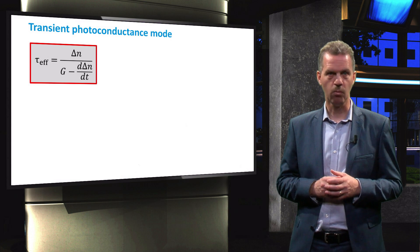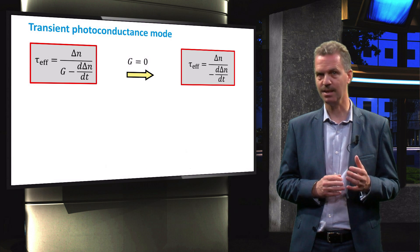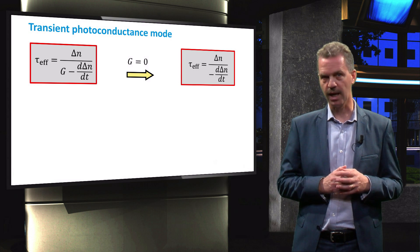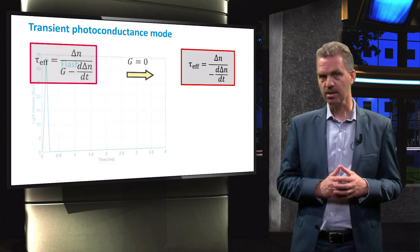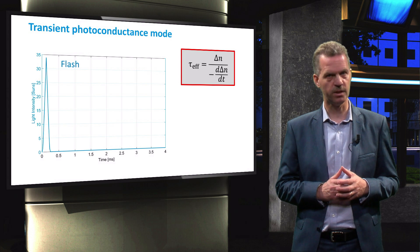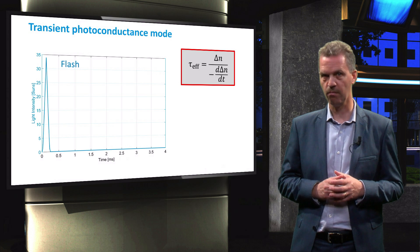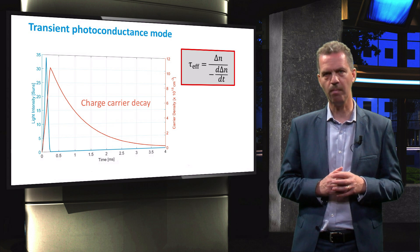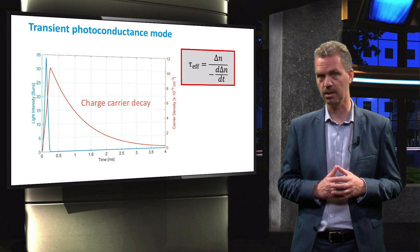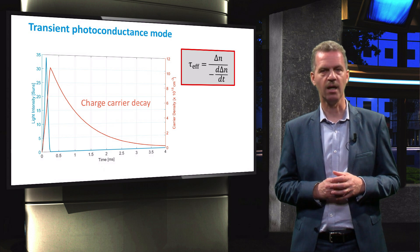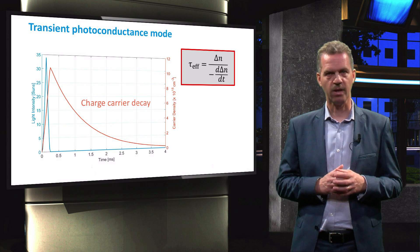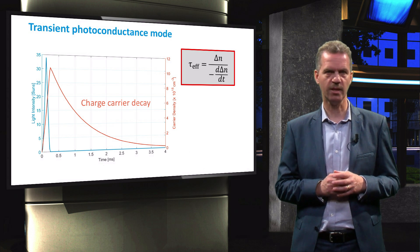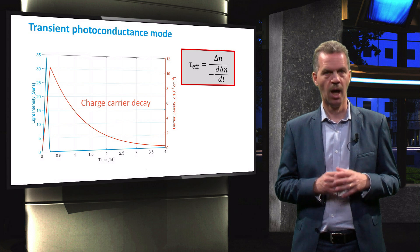In the transient mode, the equation for the effective carrier lifetime is simplified by setting the generation rate to zero, which is achieved by using a very short flash. This reduces the expression to the following form. The intensity of the flash is in the order of 30 to 35 suns and has a duration shorter than 0.5 milliseconds. A typical flash will generate a charge carrier density in the order of 10 to the power of 16 per cubic centimeter. The time resolved excess carrier density decay is calculated from the photoconductance measurement. The effective carrier lifetime is then determined from the charge carrier density decay curve, which starts right after the flash such that the generation rate is indeed zero.